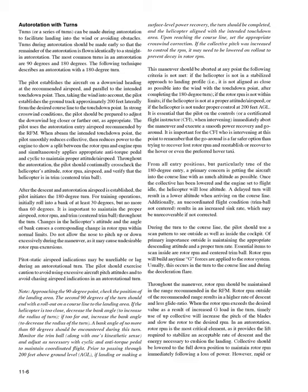Autorotation with turns: Turns or a series of turns can be made during autorotation to facilitate landing into the wind or avoiding obstacles. Turns during autorotation should be made early so that the remainder of the autorotation is flown identically to a straight-in autorotation. The most common turns are 90 degrees and 180 degrees. For a 180-degree autorotation, the pilot establishes the aircraft on a downwind heading at the recommended airspeed, parallel to the intended touchdown point, approximately 200 feet laterally from the desired course line. In strong crosswind conditions, the pilot should be prepared to adjust the downwind leg closer or farther out.